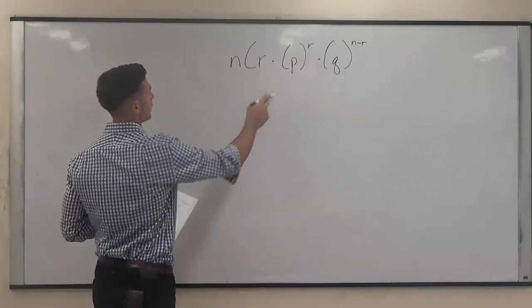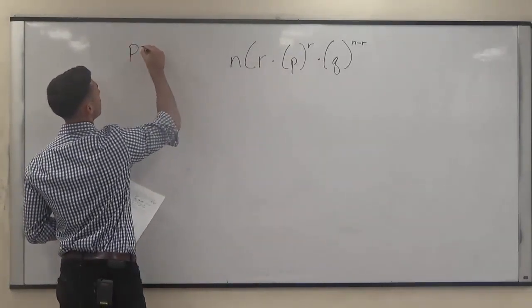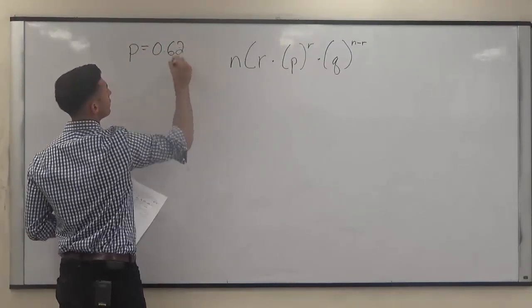So our probability of this link being believed, our P, is going to be 0.62.